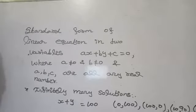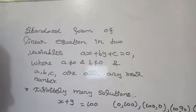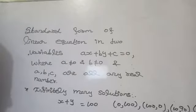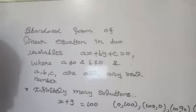Now, a linear equation in one variable is ax plus b equal to 0, where a is not equal to 0 and a and b are any real numbers. The number of solutions for a linear equation in one variable is a unique solution — you learned this in Class 8.